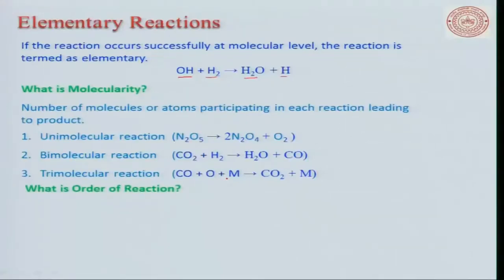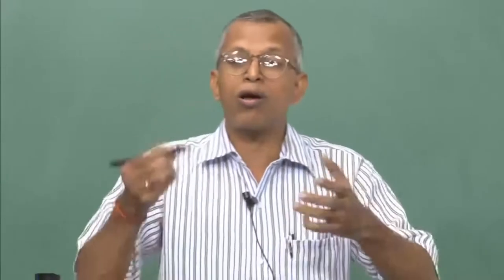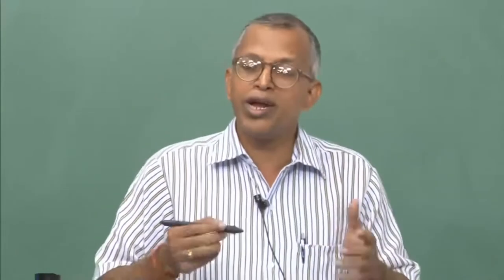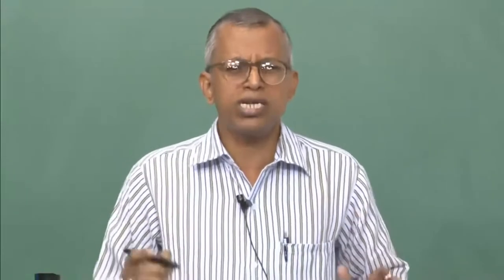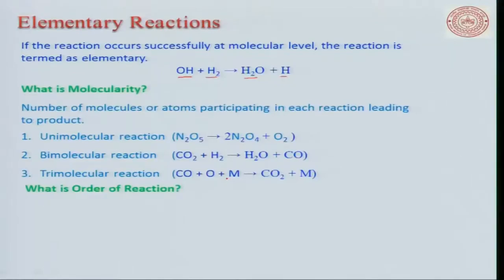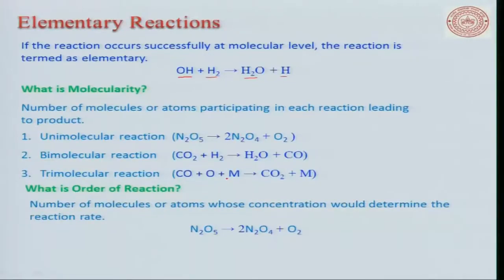There is also the concept of order of reaction, which dictates how many species' concentrations determine the reaction rate. It comes from the law of mass action. The order equals the sum of the concentration exponents in the rate expression. For N₂O₅ decomposing (forward), the order is 1. For the backward reaction involving two species plus oxygen, the order would be 3.